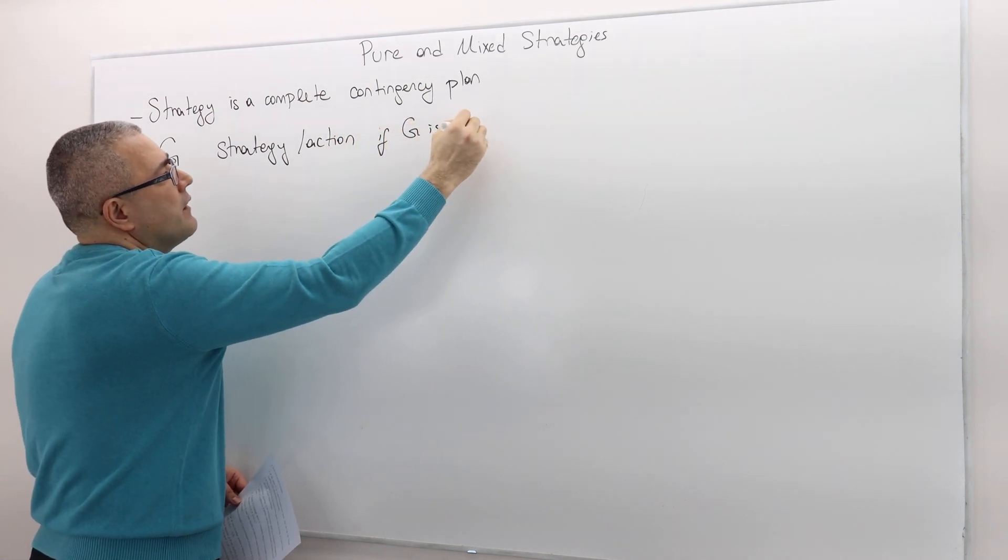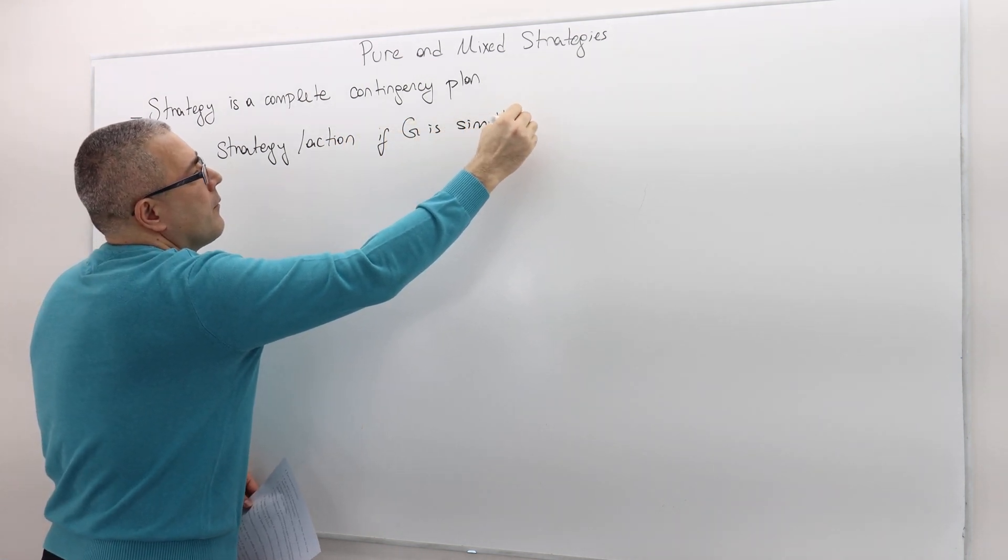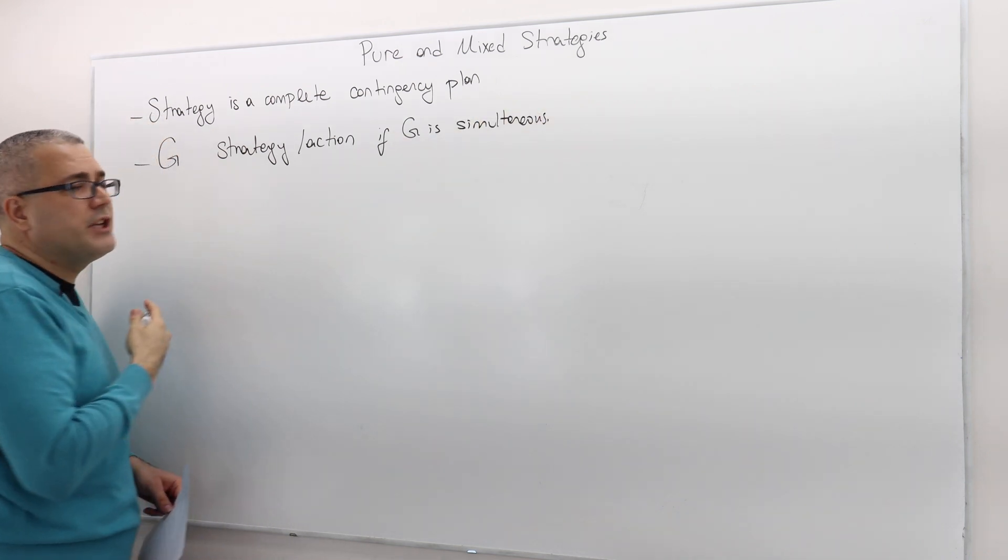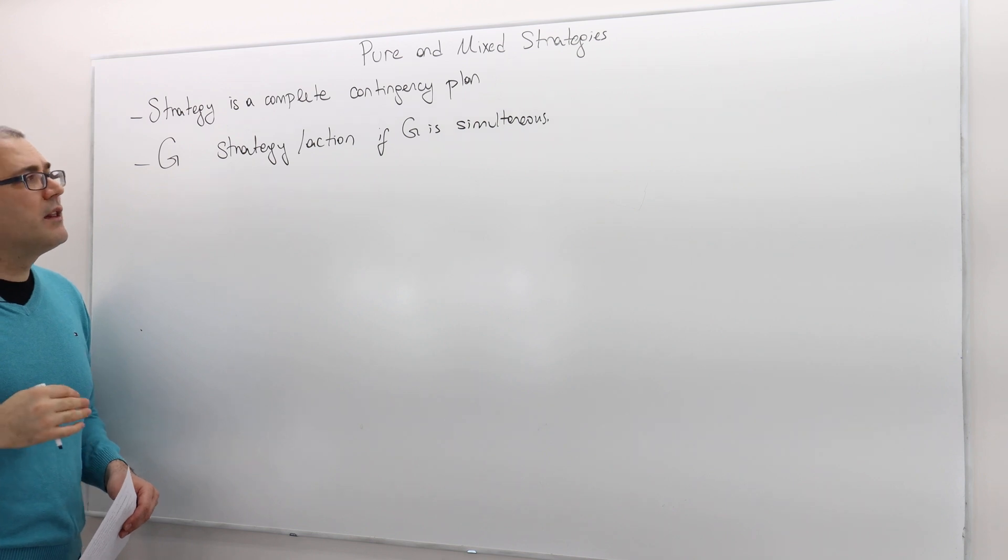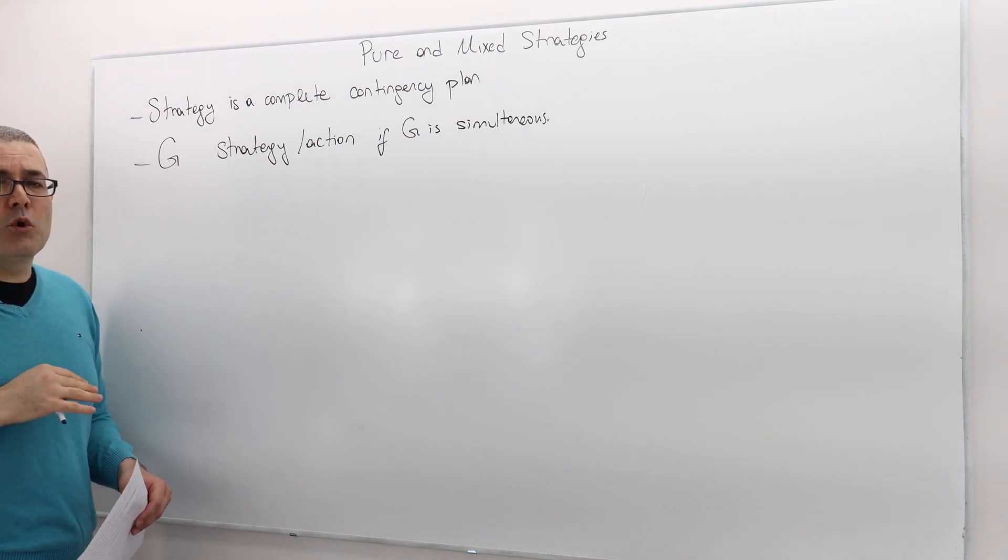If the game G is an extensive form game or dynamic game, then strategy is a bit more complicated object than action.